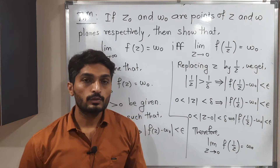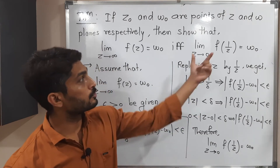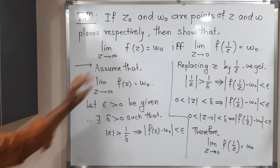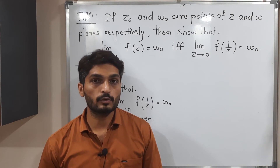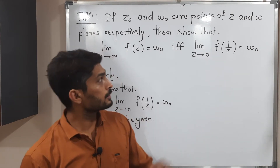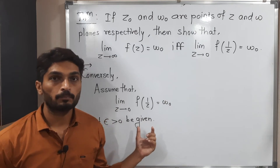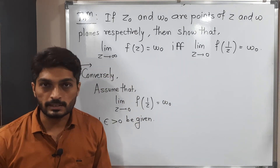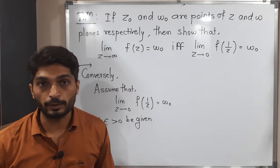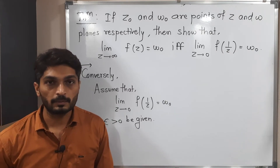Now we have to prove the converse part. I am assuming the second part and going to prove the first half. In the converse, let epsilon greater than 0 be given, and we use the epsilon-delta definition to proceed.